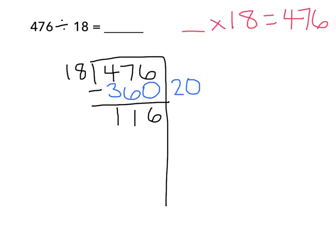So now I need to think about what times 18 is going to get me close to or equal to 116. Well, if I know that 18 times 10 is 180, then 18 times 5 is going to be 90 because 5 is half of 10 and 90 is half of 180.